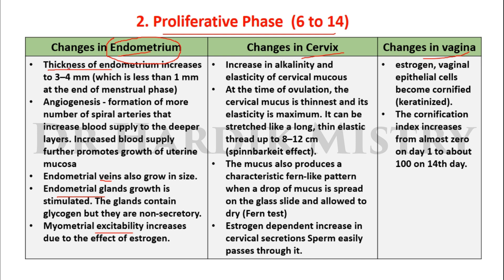In the proliferative phase, day 6 to 14: the thickness of the endometrium increases to 3 to 4 mm, up from less than 1 mm at the end of the menstrual phase. Angiogenesis leads to formation of more spiral arteries, increasing blood supply to the deeper layers, which further promotes growth of the uterine mucosa. Endometrial veins also grow in size.